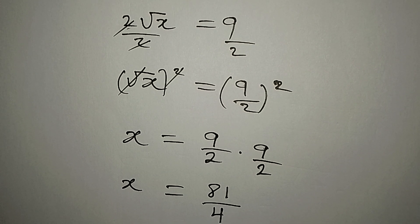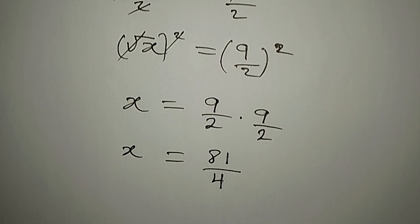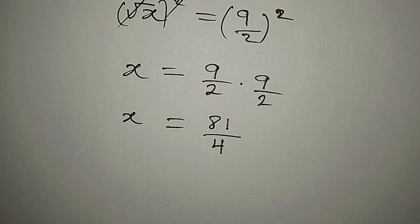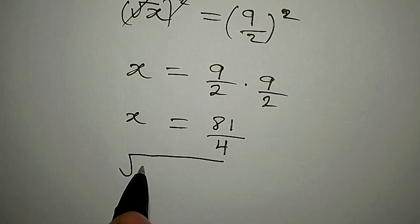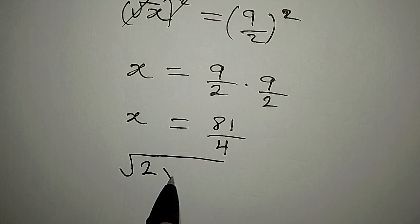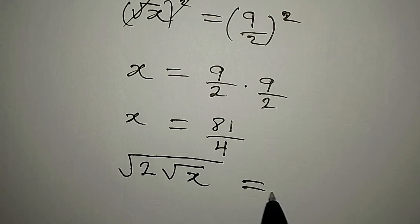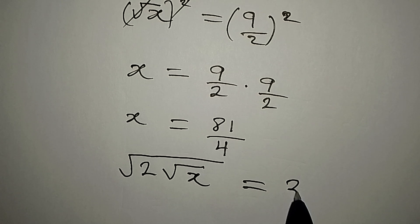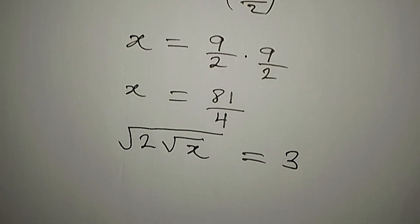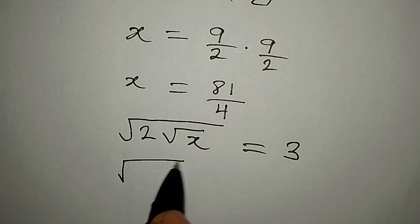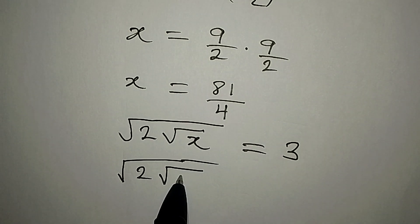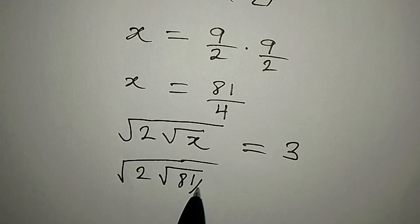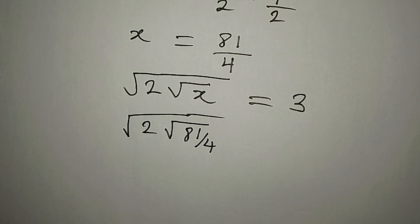Let's put this back into the problem. The equation is square root of 2 square root of x equals 3. Now x is 81 over 4. Will this give us 3?